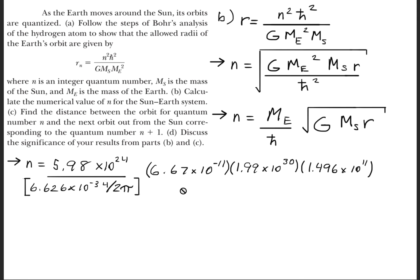The gravitational constant is 6.67 times 10^-11. The mass of the Sun is 1.99 times 10^30 kilograms, and the radius or distance between the Sun and Earth is 1.496 times 10^11 meters.